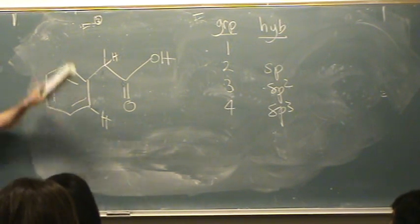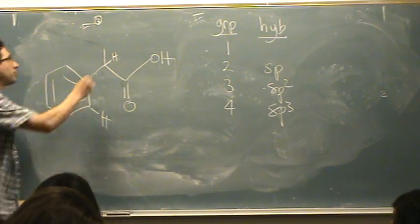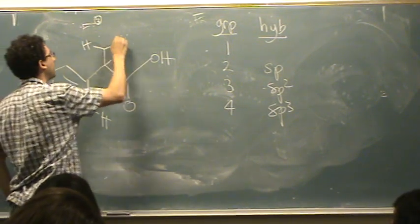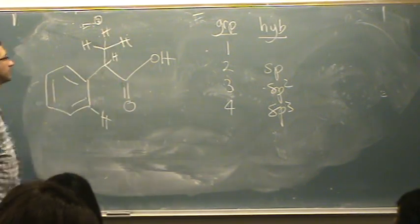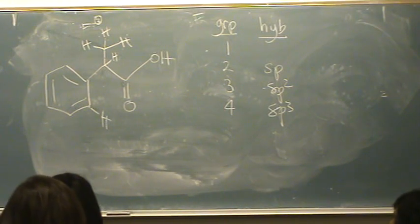Oh, I did all the carbons. How about this one? Sp3. Yeah, because there's four or three hydrogens not drawn in. Every carbon has four bonds. So that top one would be sp3. So you just have to count the number of groups around it.